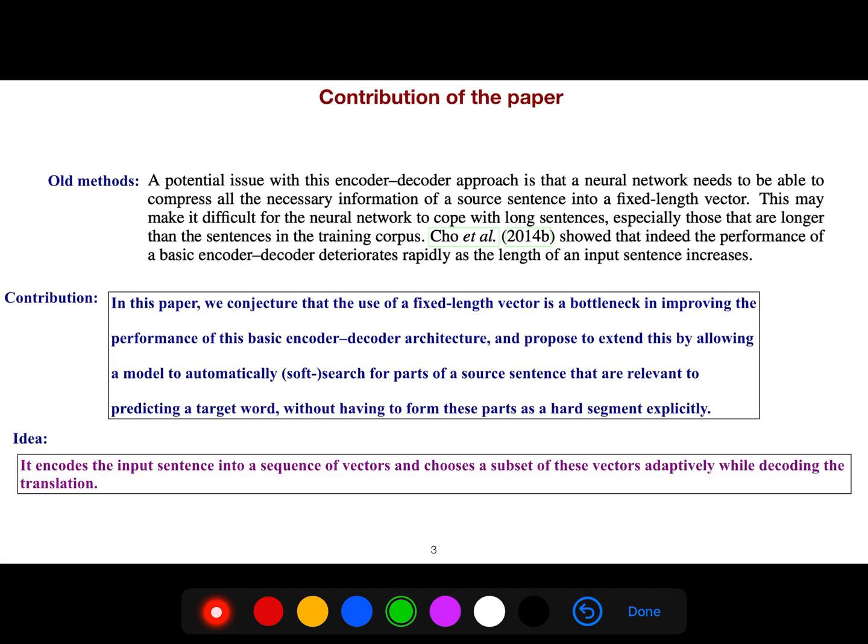So the contribution of the paper is that we conjecture that the use of a fixed-length vector is a bottleneck in improving the performance of basic encoder-decoder architecture. And so we propose to extend this by allowing a model to automatically soft search for parts of a source sentence that are relevant to predicting your target word.